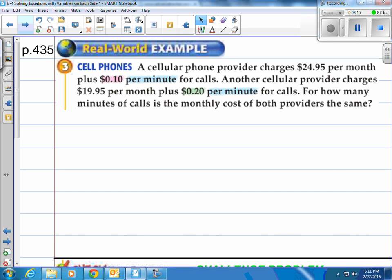Alright, our last one here. This is a real world example. And they're giving you a story here about cell phones. And then you're going to actually write the equation, and it will have variables on both sides. It says a cellular phone provider charges $24.95 per month, plus $10 per minute for calls. Another cellular provider charges $19.95 per month, plus $20 per minute for calls. Yes kids, they used to charge you per minute for calls. Now it seems like everyone's got unlimited.